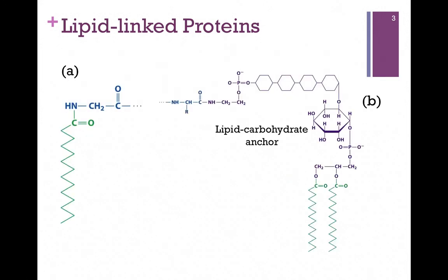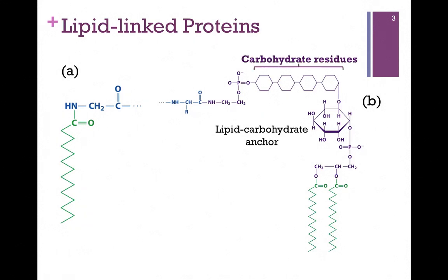Here are two examples of lipid-linked proteins. In the figure on the left, Part A, the blue portion represents an amino acid side chain or a portion of a protein, and to this we have attached a lipid anchor. In this case, it's simply a fatty acid chain, and so we have an amide link to our protein. In the one on the right, we have a more complicated lipid anchor. In this case, we have a series of carbohydrate residues indicated by the cyclic structures here. We still have our protein component in blue. To this is attached these carbohydrate residues, and to that is attached our lipid. The anchors are pictured in green. So in the figure on the left, our lipid anchor is simply a fatty acid chain, one tail.